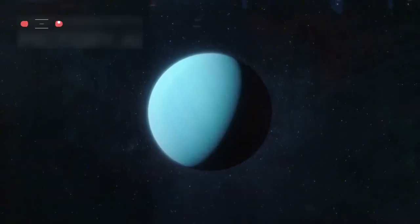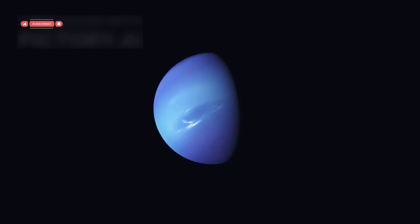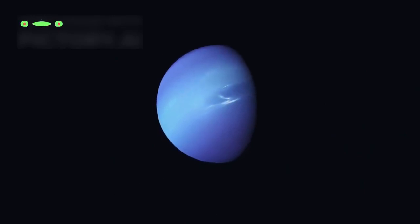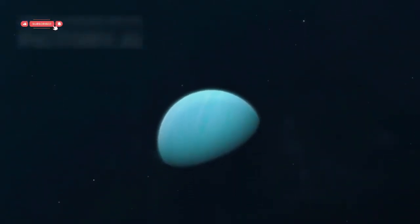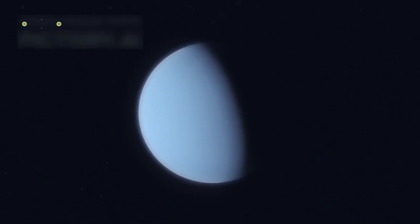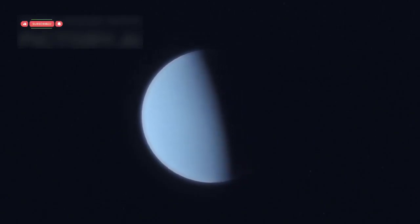Voyager 2 then went even further. It became the first and only spacecraft to fly by Uranus in 1986 and Neptune in 1989. At Uranus, it discovered ten new moons and a set of faint rings, and it found that Uranus spins on its side. The probe also studied Uranus's tilted magnetic field and atmosphere.